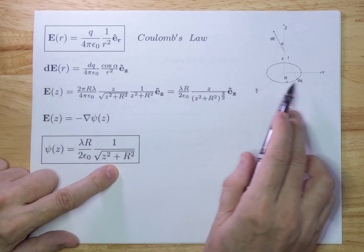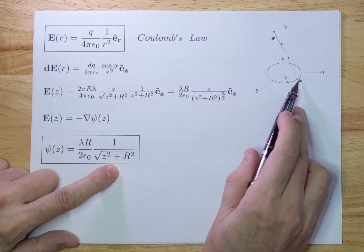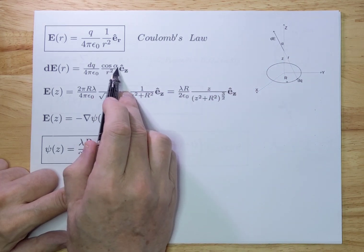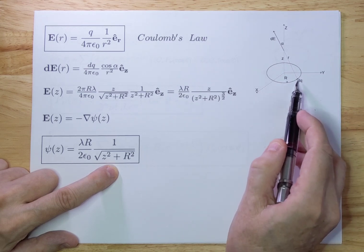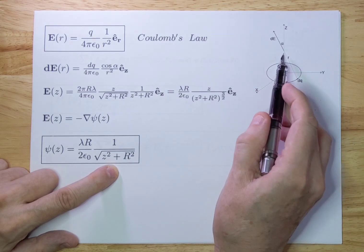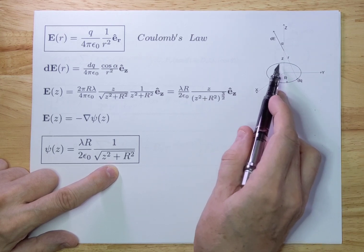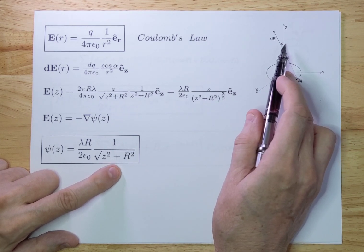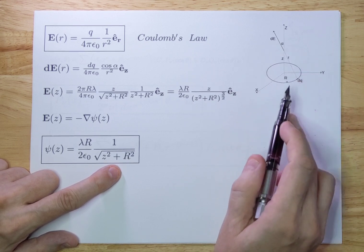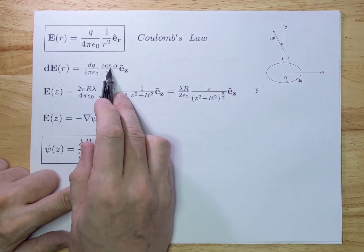dE from a small charge dQ is dQ over 4π ε₀ times r squared, with a cosine alpha term — that's where the symmetry comes in. If you go on the axis, a dQ here will result in a dE with a component in the XY plane and one in the Z direction. The XY component cancels with a dQ on the other side of the ring. So if you add up all the electric fields in the ring, there's only an E field in the direction of the Z axis. That's why you have the cosine term: dE cosine is the dE field in the Z direction.